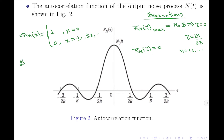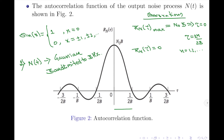Since the input to the filter is a white Gaussian noise process, the filtered output is also a Gaussian process, but it is band limited to B hertz. Therefore, if the filtered noise process n(t) is sampled such that the samples are separated by exactly 1/(2B) seconds apart, then the samples generated will be completely uncorrelated with each other. Further, since the process is Gaussian, uncorrelatedness implies that the samples are statistically independent.